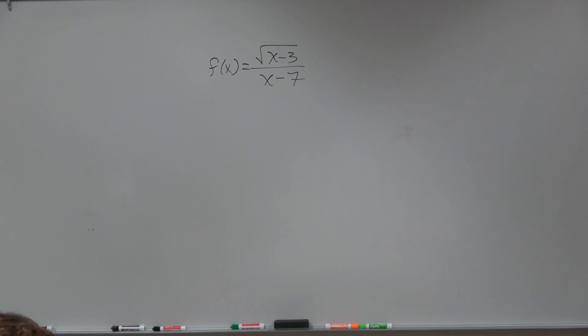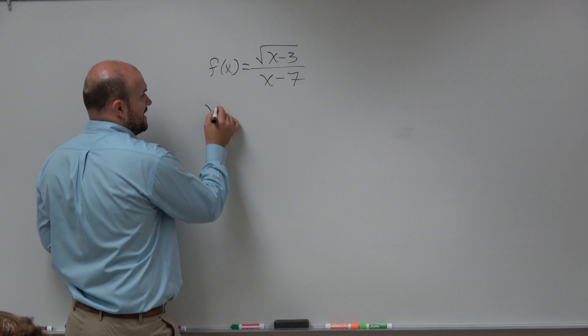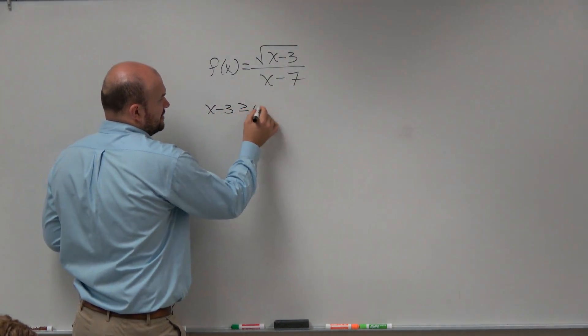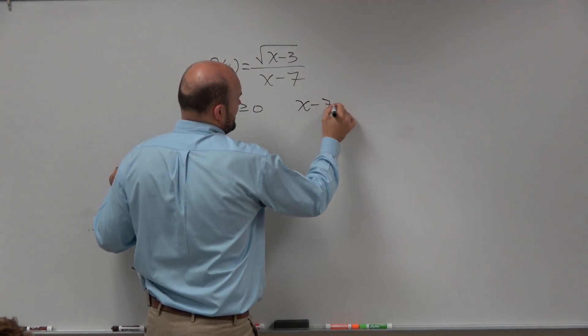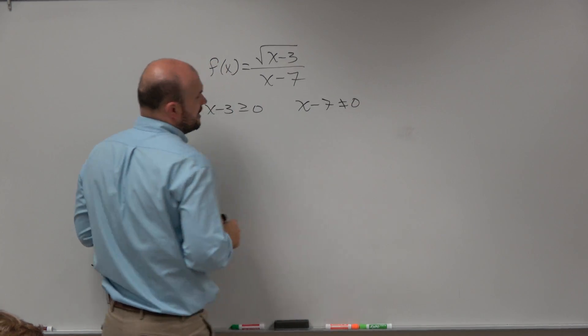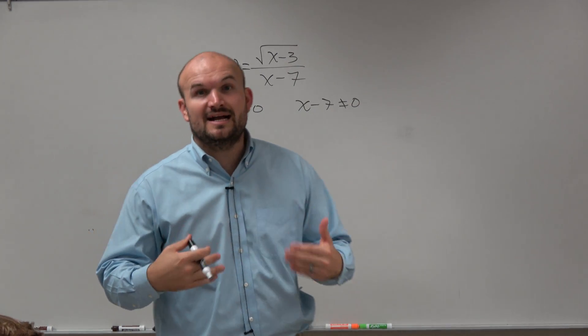This is determining the domain of the function. You guys can see that we have two constraints. We have x minus 3 has to be greater than or equal to 0, and x minus 7 cannot equal 0.